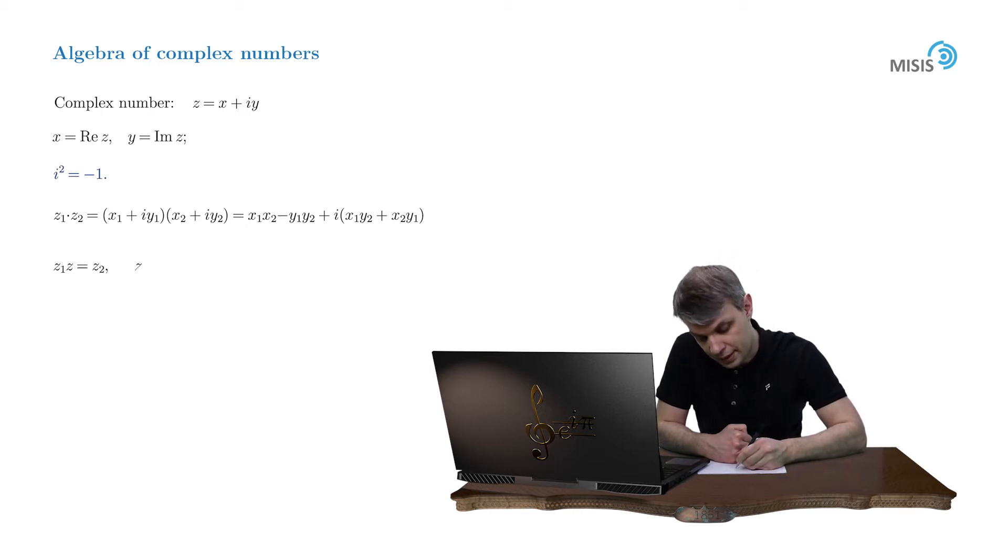Well, formally speaking, z is equal to z2 divided by z1 or z2 multiplied by z1 to the power of negative 1. But how do you actually divide these two complex numbers z2 and z1? Well, for example, z1 is real. Then everything is simple. z1 is equal to x1.